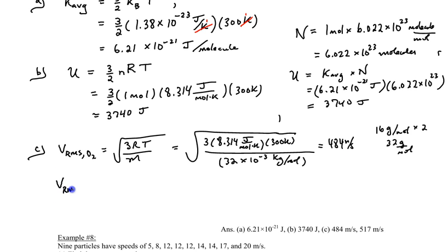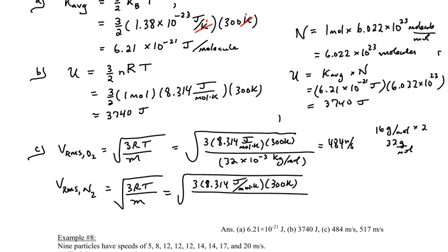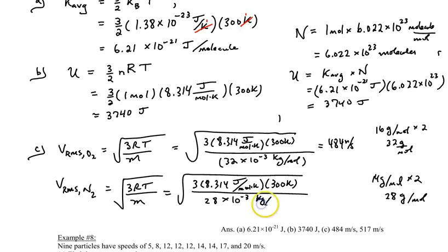For nitrogen (N₂), each nitrogen atom is 14 g/mol, and since it's diatomic, the molar mass is 28 g/mol, or 28 × 10⁻³ kg/mol. Putting that into the molar mass formula gives 517 m/s, consistent with the per-molecule method.